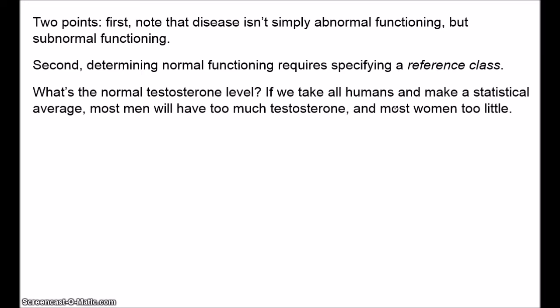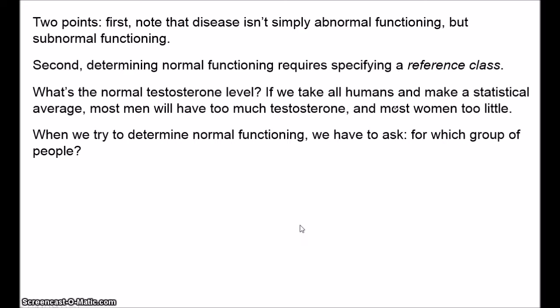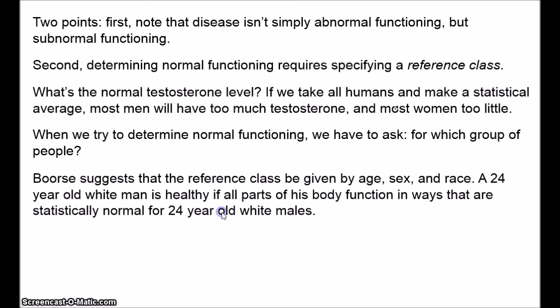Similarly, if you ask what's the normal heart rate, heart rate changes as people age. A healthy heart rate for a newborn baby would be pretty severe tachycardia for a 30-year-old. So our judgments of normal function have to be relativised to age. Boorse suggests that the reference class should be given by age, sex, and race. So if we have a 24-year-old white man, he will be healthy just in case all of the parts of his body and all of the processes going on in his body are functioning in ways that are statistically normal relative to 24-year-old white males.